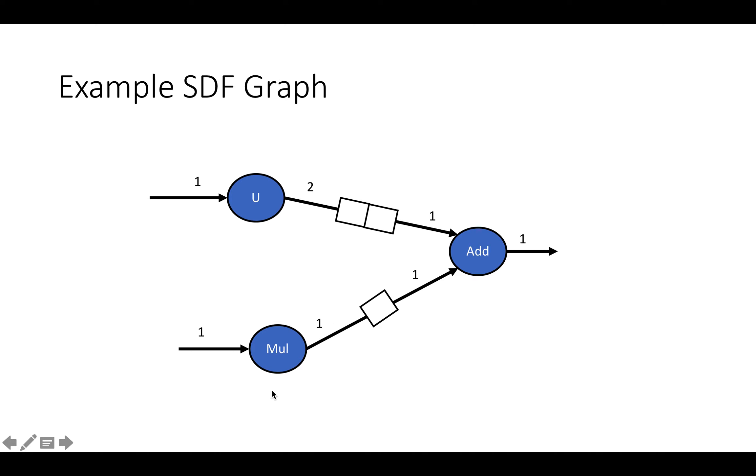And then at the bottom, connected to the adder as well, we have a multiplier which takes in one piece of data on each firing, produces one piece of data on each firing, and we've connected the multiplier to the adder with a FIFO of size one.